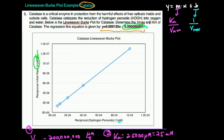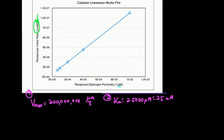Welcome back to enzyme kinetics in biochemistry. My name is Kevin Tokoff, and in this video we're going to do a continuation of the last video where we analyze a Lineweaver-Burke plot for the enzyme catalase and determine the four kinetic parameters. In the previous video we calculated the Vmax, which was 200 million micromolar per second, and the Km, which was 25 millimolar or 25,000 micromolar. The two remaining parameters are kcat and catalytic efficiency.